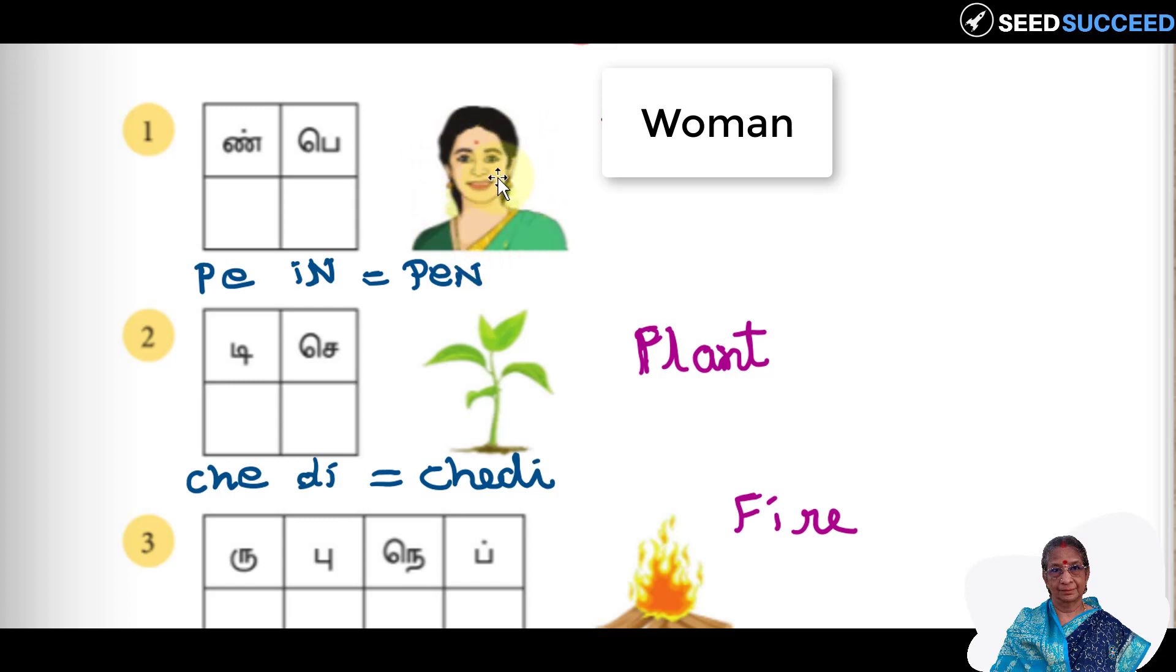This picture will say it in English as woman. In Tamil, pen. How we are pronouncing a word? Letter by letter, the sounds will join together and make a word. Pen, pe in. But here it is written as in pe, so we are changing it. First letter is pe. Pe in pen. Clear? So we reordered it.